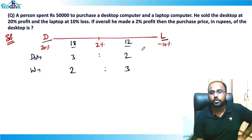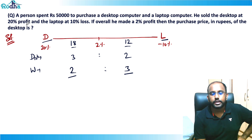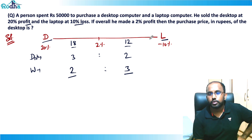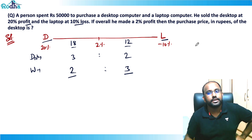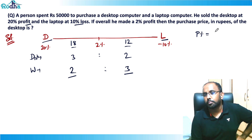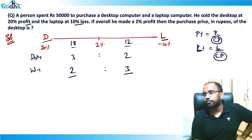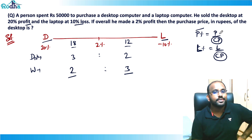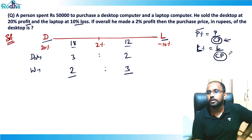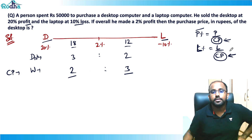That means the price of desktop and laptop is in the ratio of 2 to 3. It is a price ratio because when we apply allegation using profit percent — which is profit upon CP, or loss percent which is loss upon CP — whatever is in the denominator is what we get in allegation. So allocating profit and loss percent gives us the ratio of cost price, which is 2 to 3.